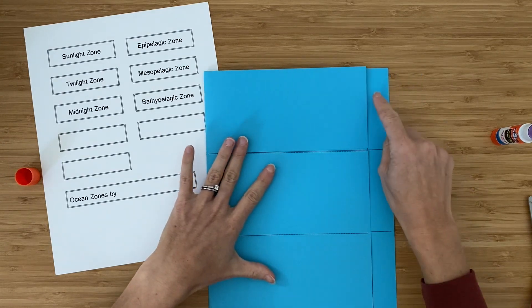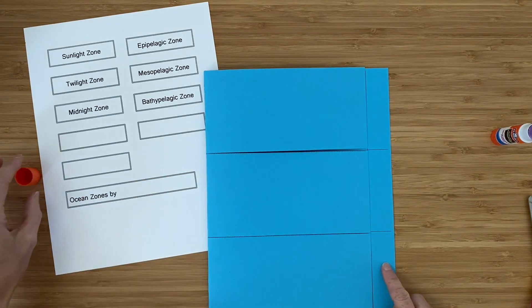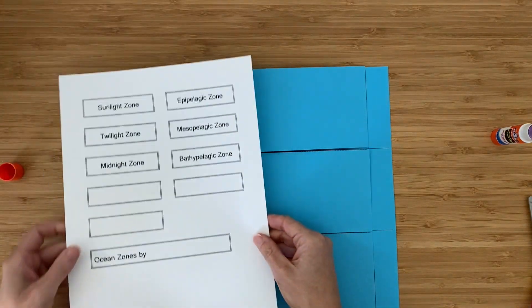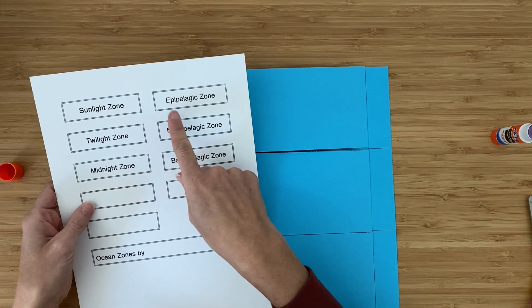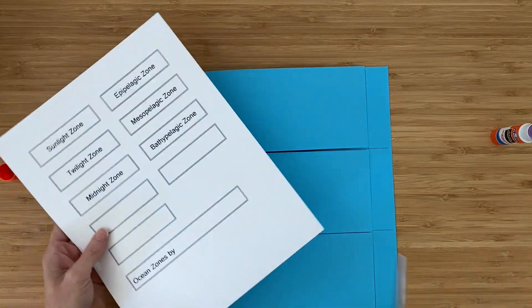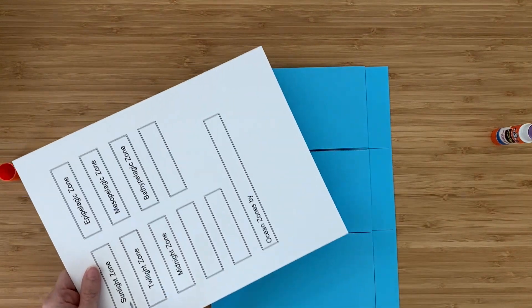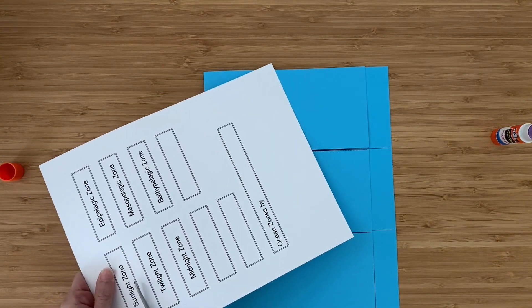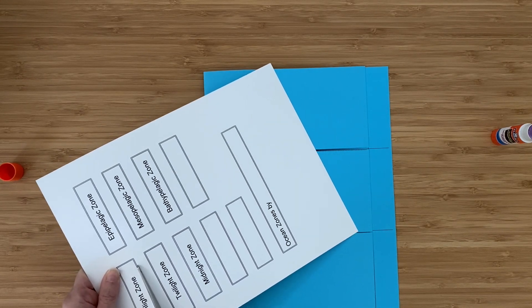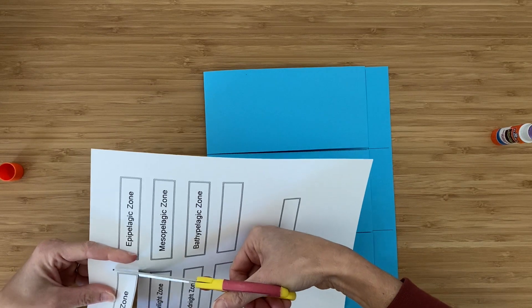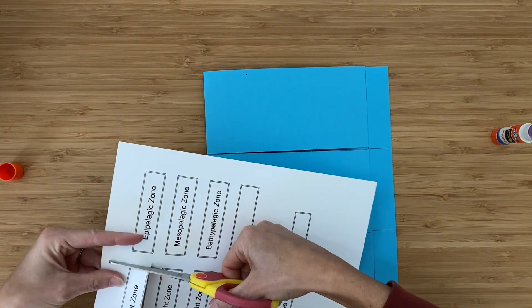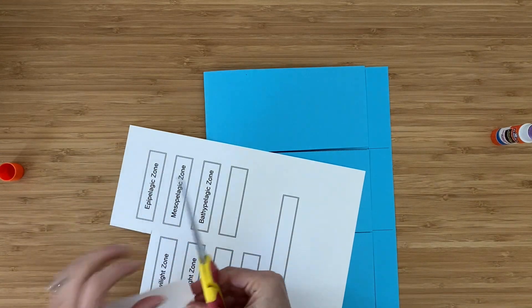Next you'll add the names of the ocean zones right here. Depending on what grade your child is in, you might be learning different names. We've got the sunlit zone or the epipelagic zone, which is the top layer that gets the most light. Then underneath that is the twilight zone, also known as the mesopelagic zone. There's a little bit of light that makes it down there, but none in that last zone, which is called the midnight zone or the bathypelagic zone.